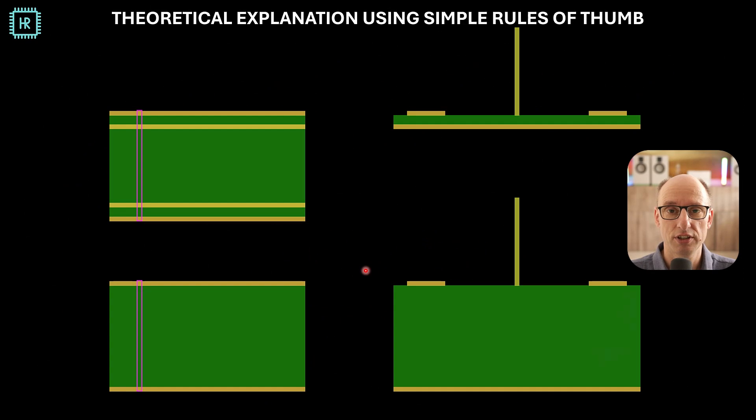So in order to investigate what's going on, I've made these cross sections. Now, the top two drawings, these two represent the four layer solution, where your ground plane is very close to your signal layer. The bottom two pictures represent the two layer solution, where your ground plane is very far away.